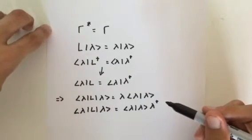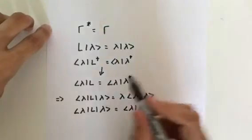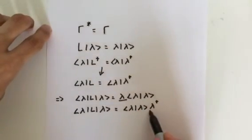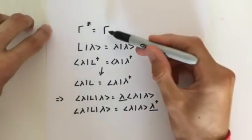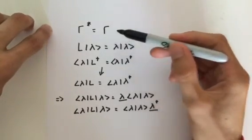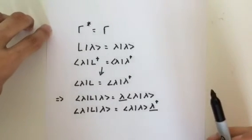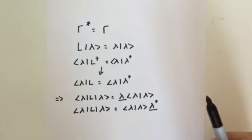So obviously, for both equations to be true, lambda must equal the complex conjugate of lambda. Therefore, if it's equal, it must be a real number. And therefore, any eigenvalue of a Hermitian operator must be a real number.